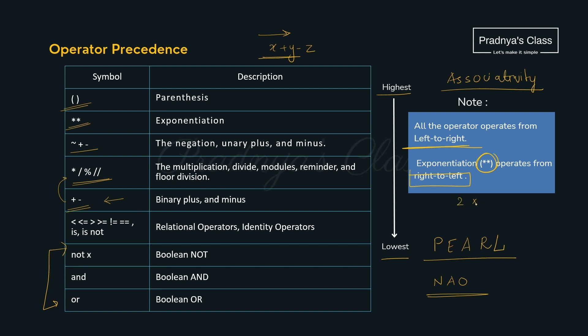Here is a simple example with only the exponentiation operator. Exponentiation operates from right to left, so first 2 to the power 1 will be calculated, giving 2. Then 2 to the power 2 will be calculated, giving the result 4. Hope all your doubts related to operators are now cleared.